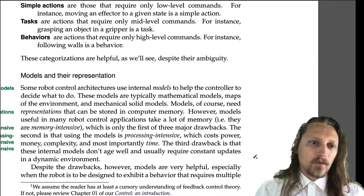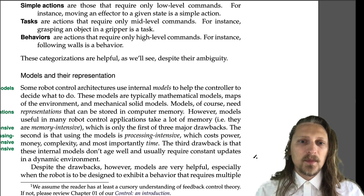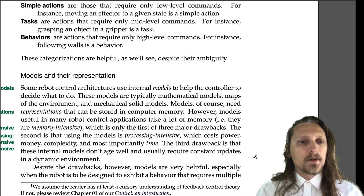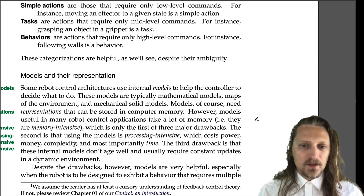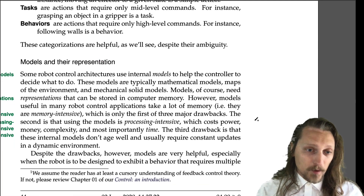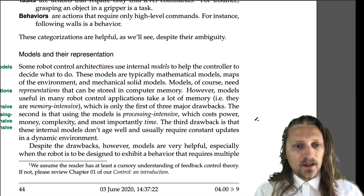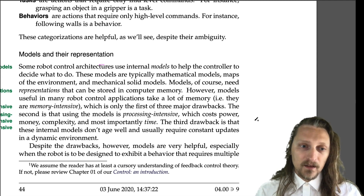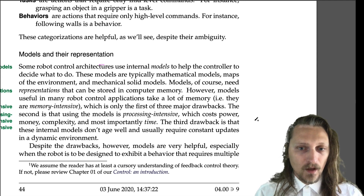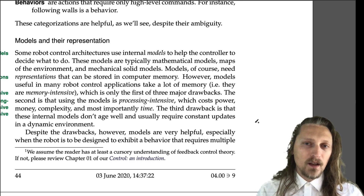Models and their representation. Some robot control architectures use internal models to help the controller decide what to do. Models are typically mathematical models, maps of the environment, and mechanical solid models. Models need representations that can be stored in computer memory. However, models useful in many robot control applications take a lot of memory — they are memory intensive. That is only the first of three major drawbacks to using models. The second is that using the models is processing intensive, which costs power, money, complexity, and most importantly, time. The third drawback is that these internal models don't age well and usually require constant updates in a dynamic environment.